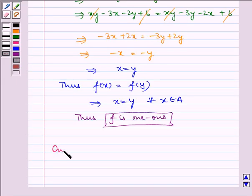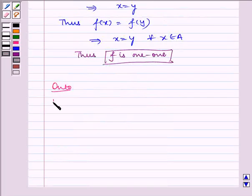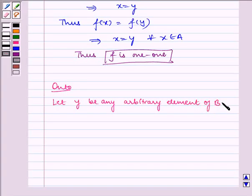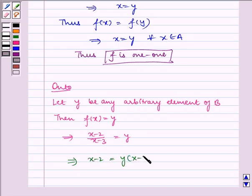Now, let us check for onto. Let y be any arbitrary element of B. Then, f of x is equal to y, which implies (x minus 2) by (x minus 3) is equal to y, which implies x minus 2 is equal to y into (x minus 3).